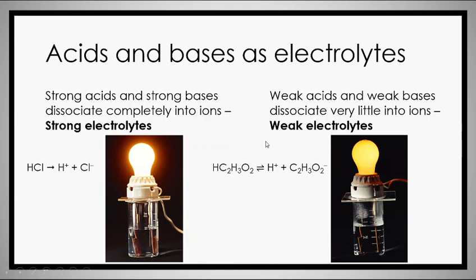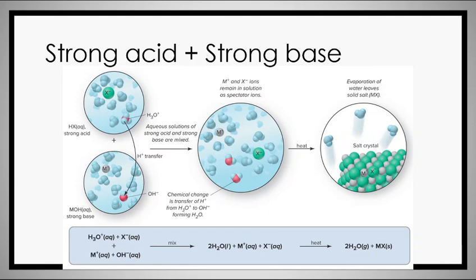This is the reason you need to know which acids are strong versus weak. For a strong acid and strong base, the net ionic reaction is simply the creation of water. A note on H3O+: that's just a way of saying an H+ ion is very close to a water molecule — it's called a hydronium ion. For this course, any time you see H3O+, you can treat it as H+.